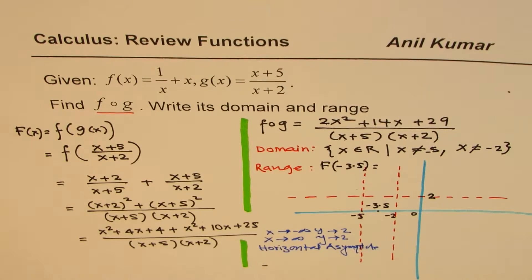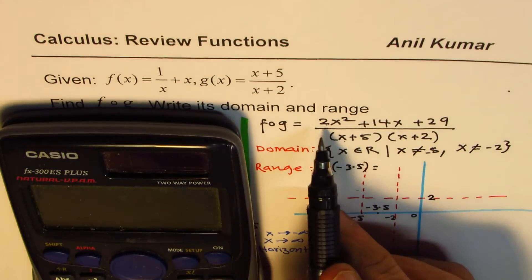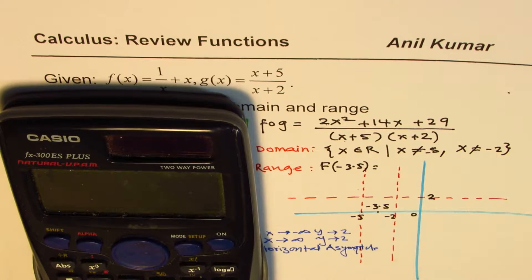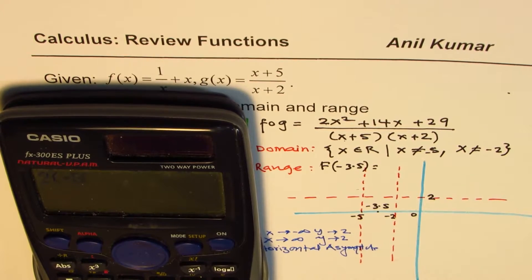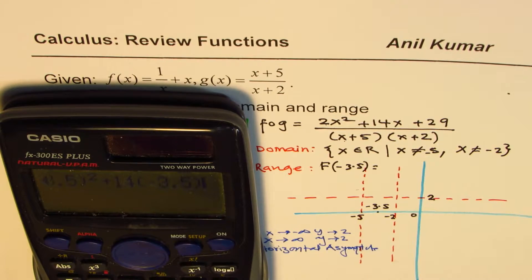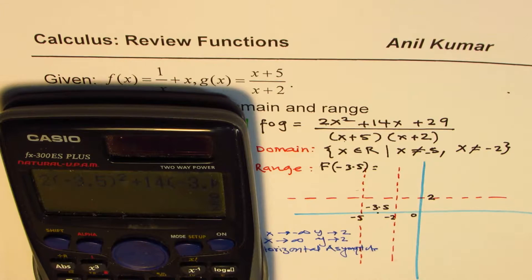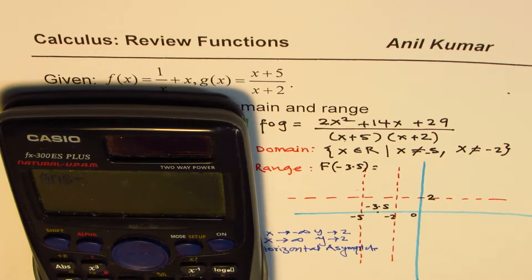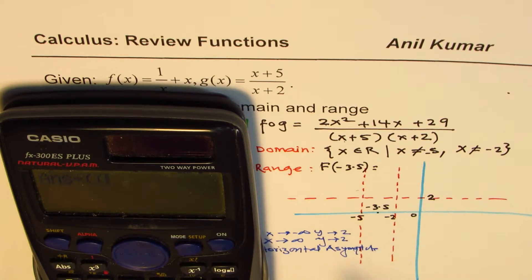So at minus 3.5. You can use calculator to calculate this value. So I'll just substitute minus 3.5 in my equation. So we get 2 and within brackets minus 3.5 square plus 14 times minus 3.5 plus 29. That's the numerator. And then we'll divide this by, we are replacing x by minus 3.5. So I'll divide this by, let me put 2 brackets. One is minus 5 minus 3.5 and the other one is minus 2 minus 3.5.